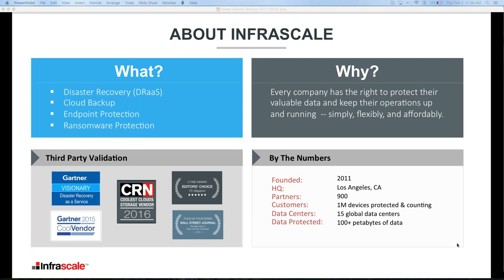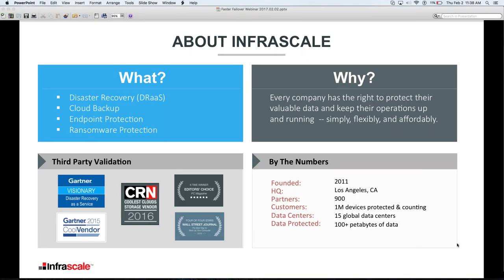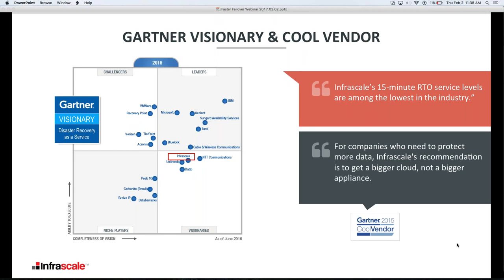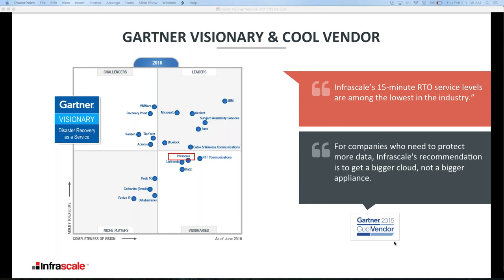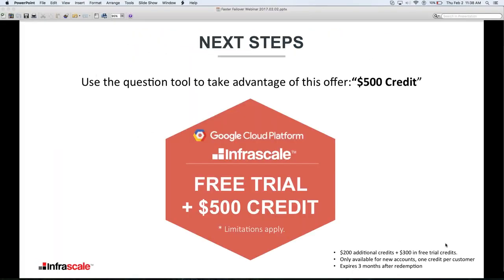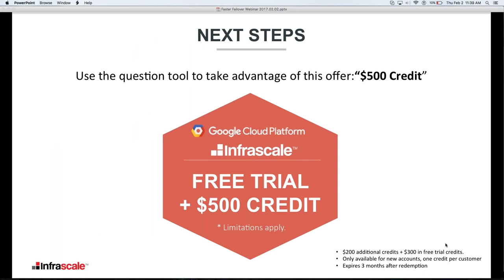Our approach is getting lots of attention. Leading analyst firm Gartner named us in 2015 the Cool Vendor in Business Continuity and Disaster Recovery. In 2016, they named us a Visionary in the Disaster Recovery as a Service Magic Quadrant. Looking at the quadrant — bottom to top is size of the company and ability to execute; left to right is completeness of vision. Infrascale is at the very top of that visionary quadrant. I want to introduce the next steps before we get into the last poll and the Q&A.